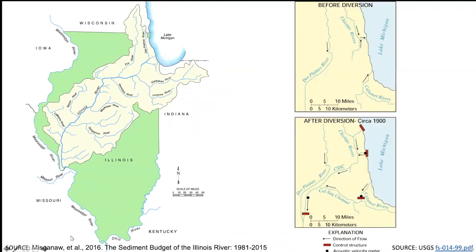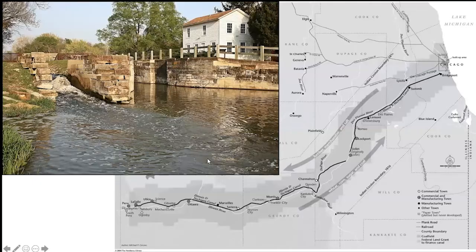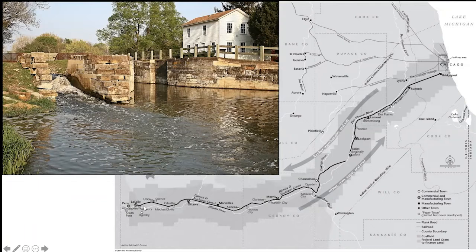...is they decided they needed to construct a canal between the area that is now Chicago down to La Salle-Peru, about 92 miles or so. This was actually an important moment both biologically and hydrologically, as well as in terms of human population.